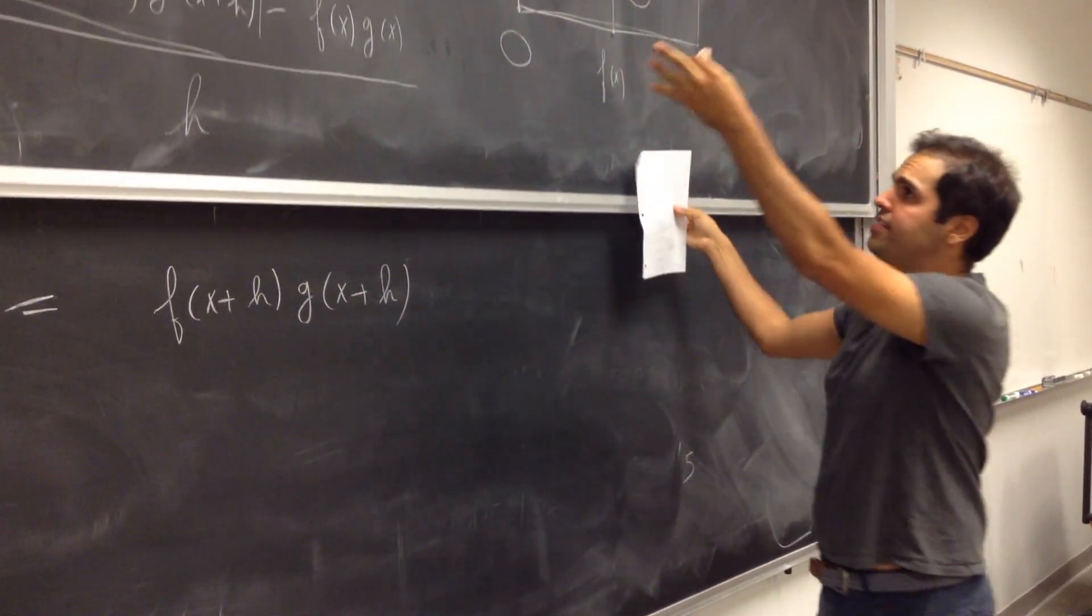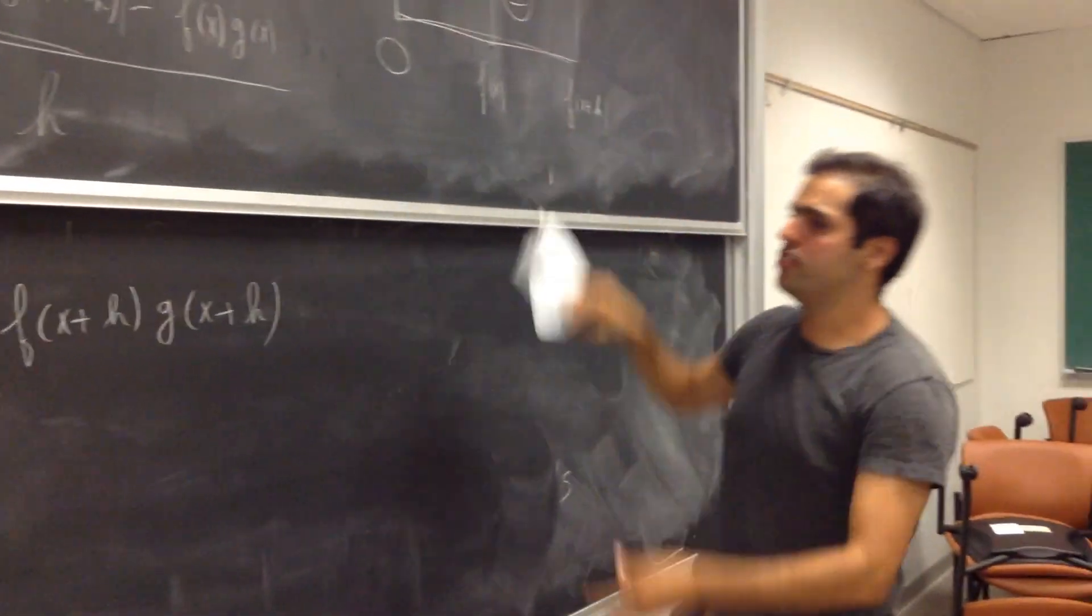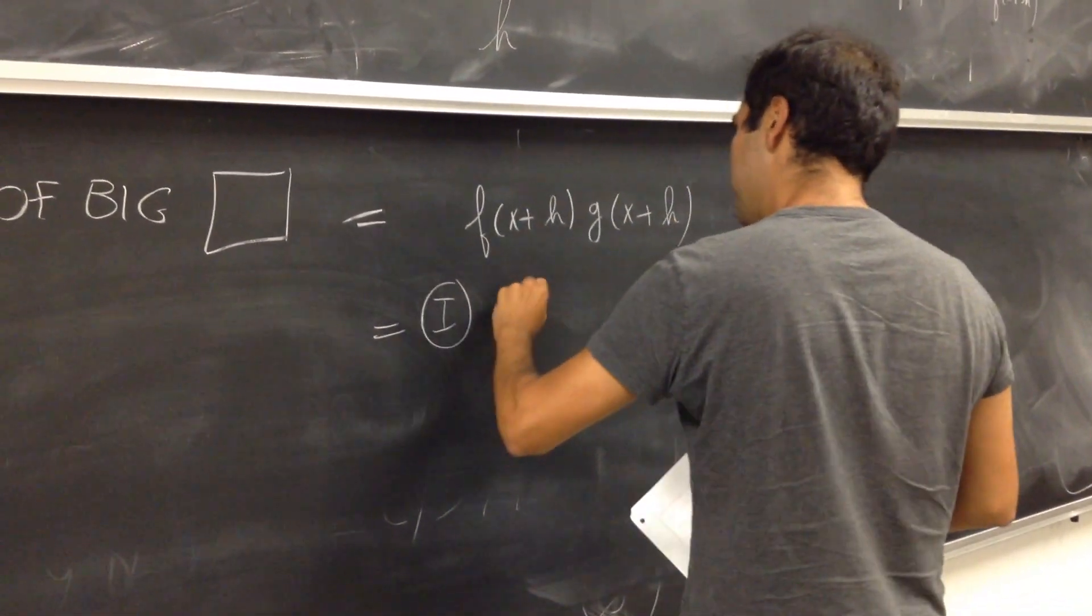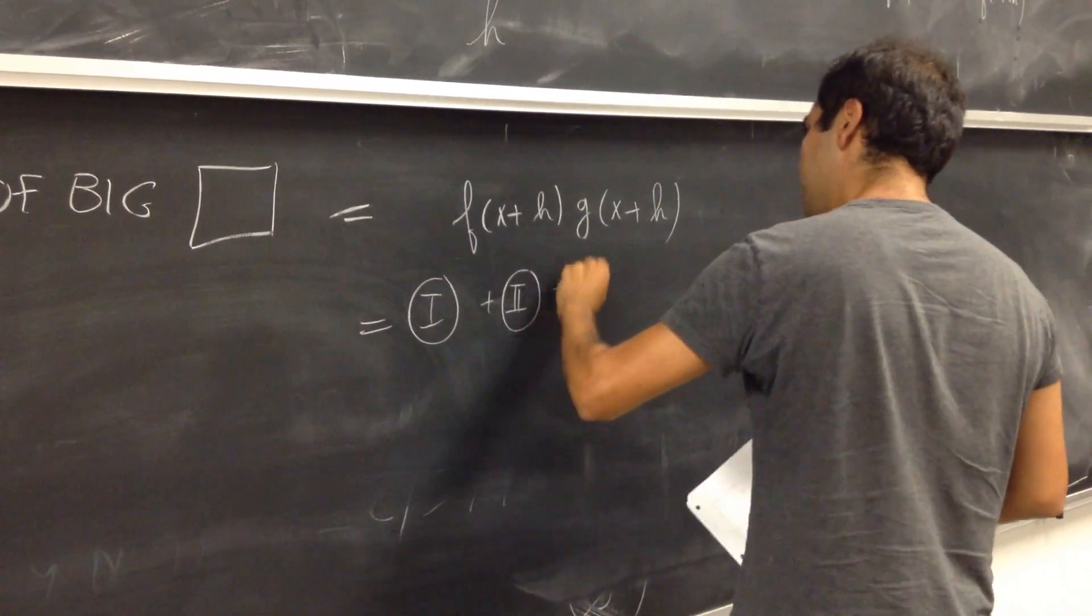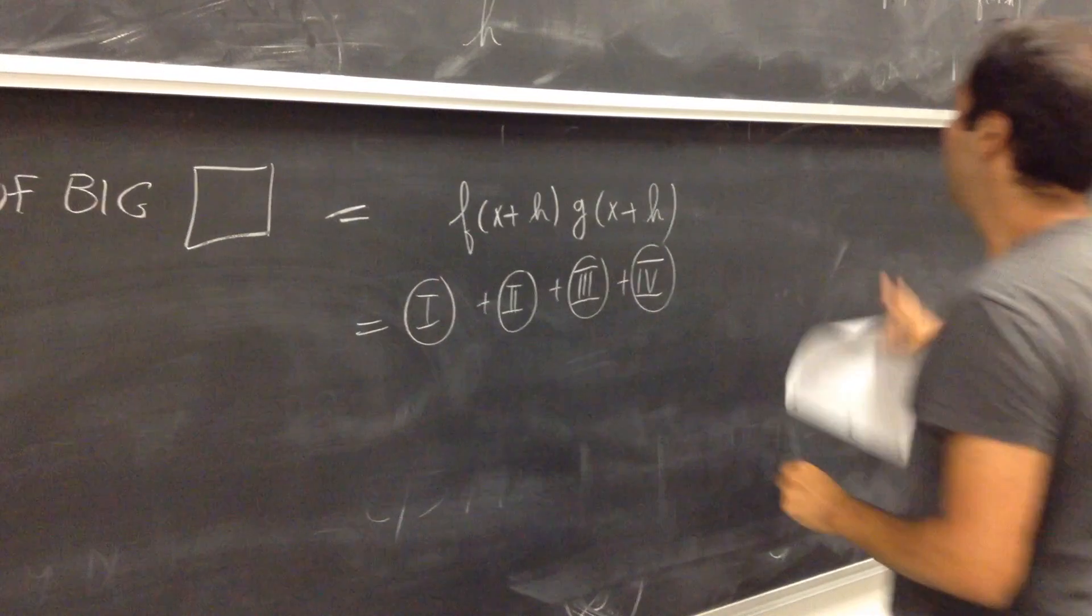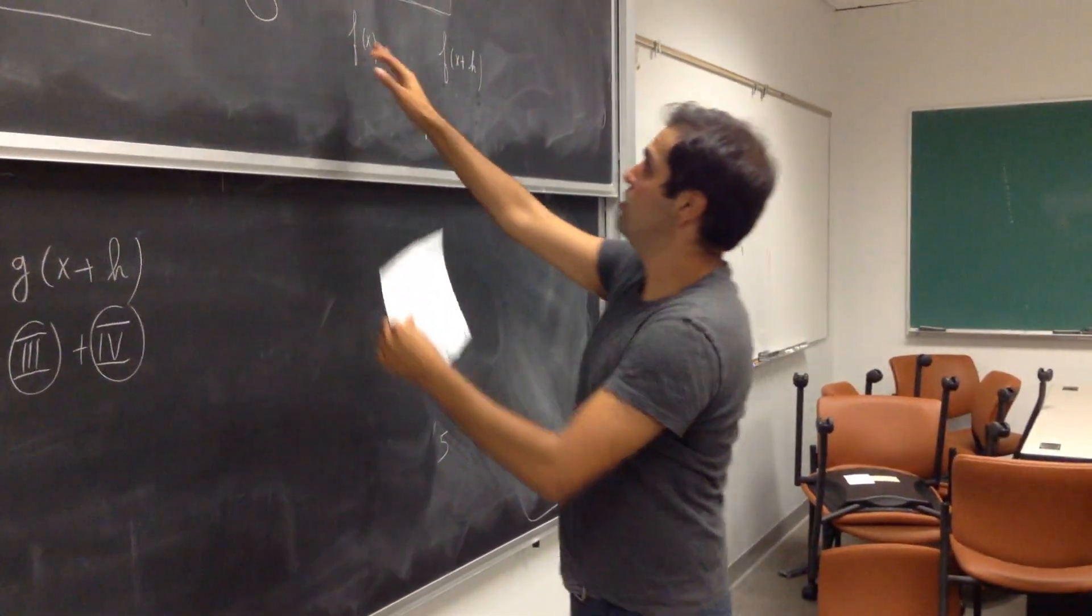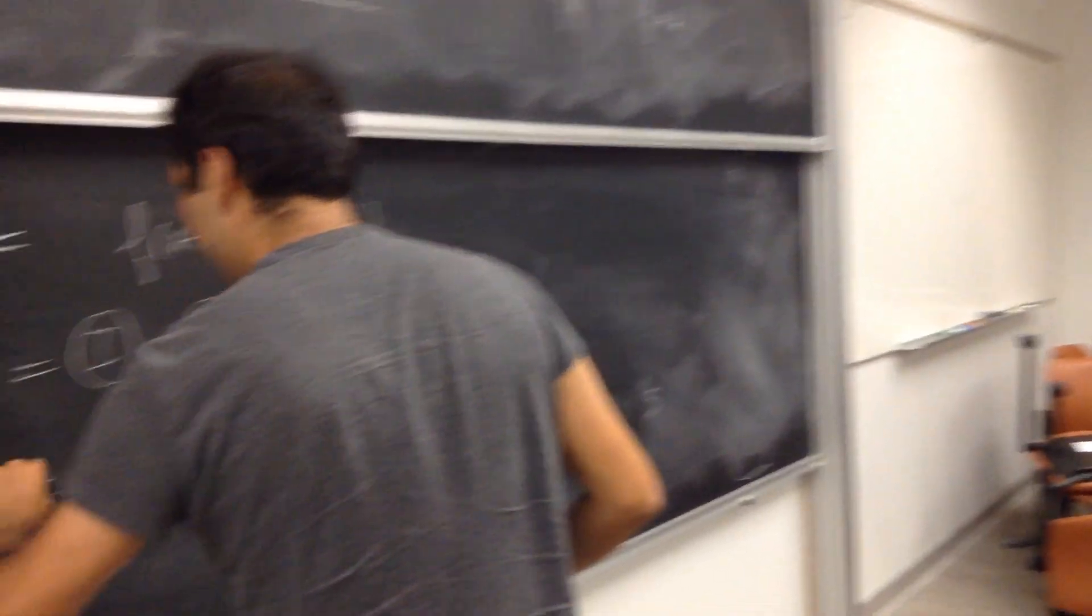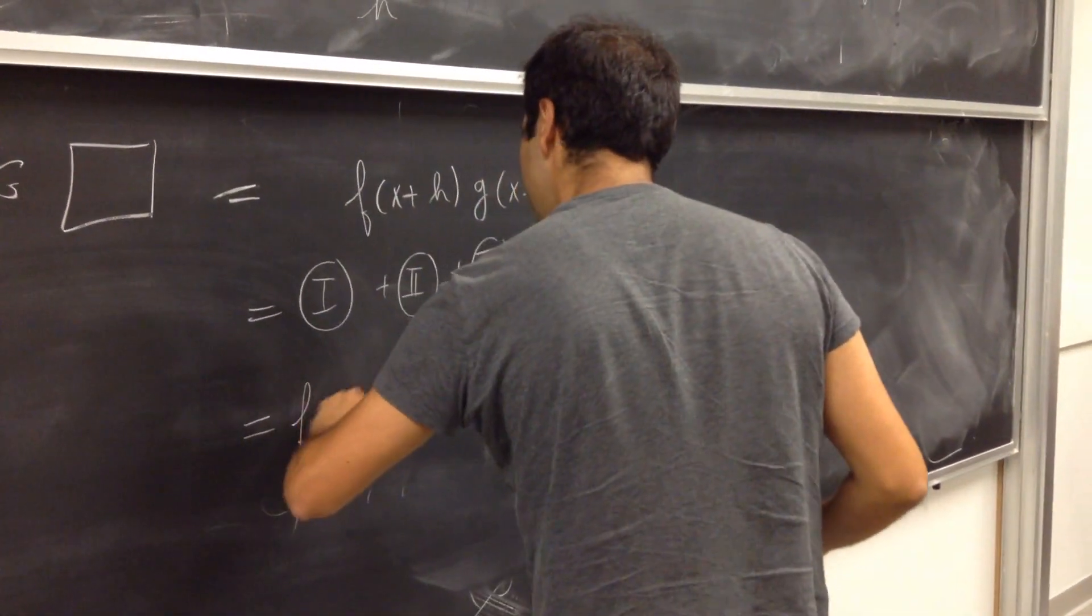And so let's see what each of those areas equals to. So that's one plus two plus three plus four. But look, one is just - the base is f of x, the height is g of x, so the area is f of x times g of x.